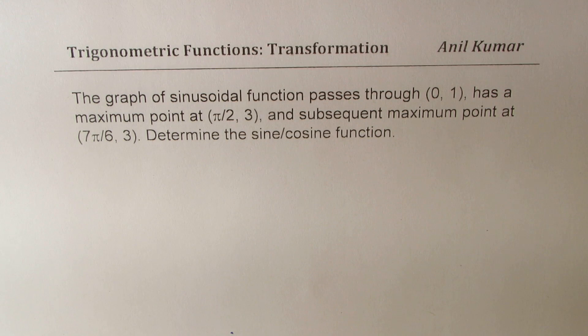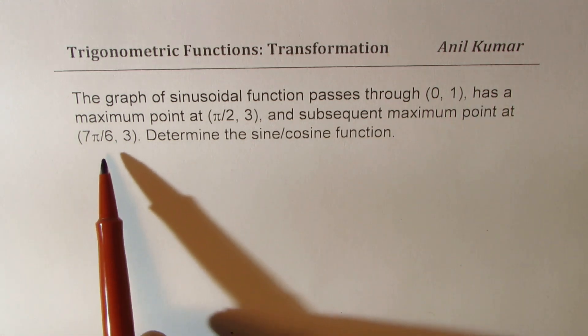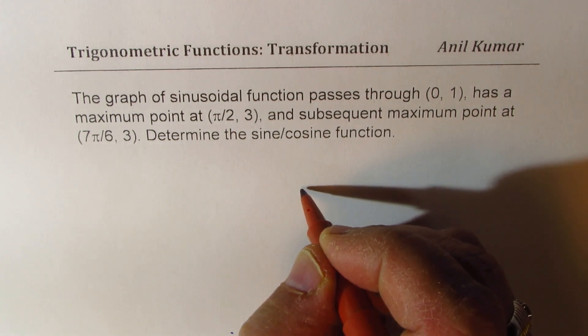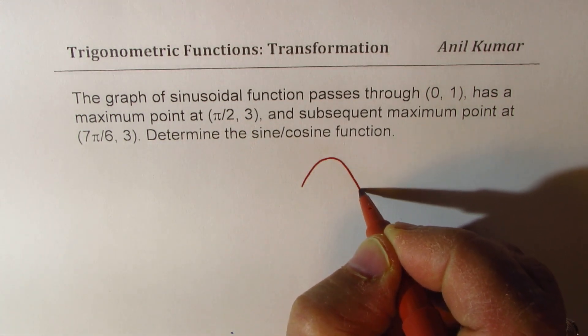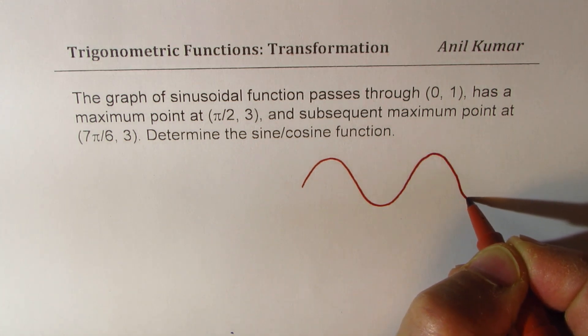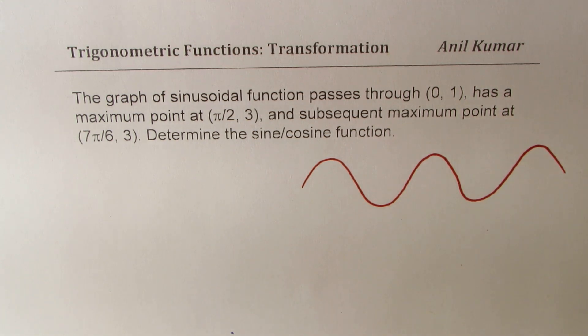This question is very unique since you do not have the minimum point information or any related point which could directly give you the answer. So we need to analyze what is given to us - the point (0,1) and the two maximum points. Now let me just sketch a sine function here, a sine wave, and then we'll try to figure out how to get equation of such conditions.